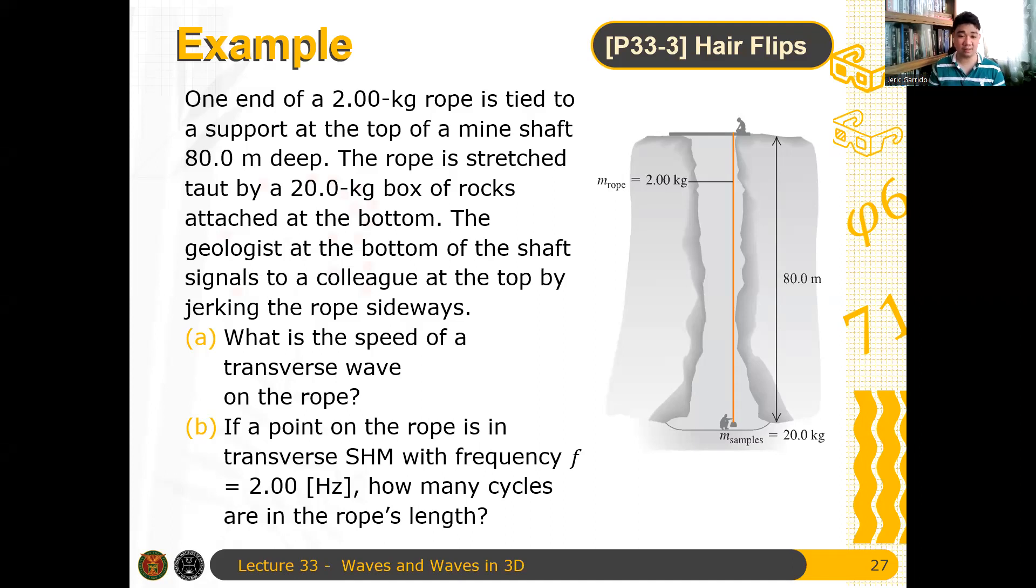The geologist at the bottom of the shaft signals to a colleague at the top by jerking the rope sideways. Letter A, what is the speed of a transverse wave of the rope? And letter B, if a point on the rope is in transverse simple harmonic motion with frequency f is 2 hertz, how many cycles are in the rope's length?